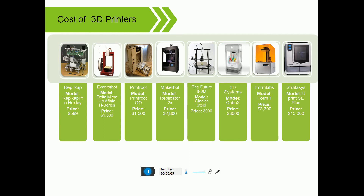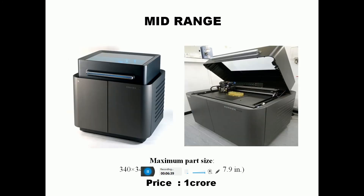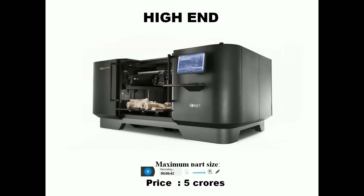3D printer models vary in price. The first model is $600, the second is $1,500, the third is $1,500, the fourth is $2,800, the fifth is $3,000, the sixth is $3,000, the seventh is $3,300, and the eighth is $15,000. Some higher-end models are priced in Indian rupees: the Magnum model starts at 60 lakhs, with part sizes going up to 1 crore and 5 crore.